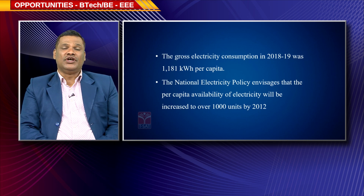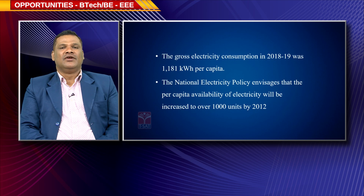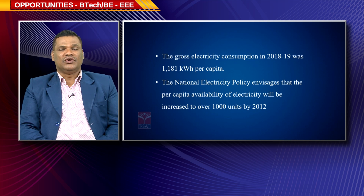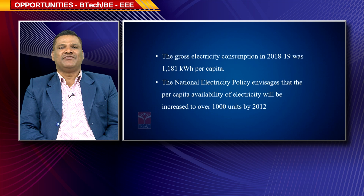That was old data. Recently the data has been enhanced up to 2020, 2022, and 2030. The data is no longer just 1,000 units — it is going up to 2,000 or 3,000 units per individual, because consumption of electricity per individual is much more now.